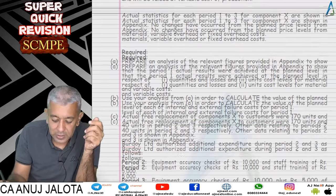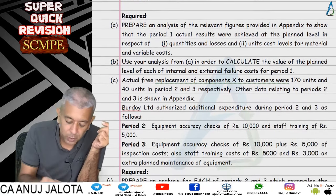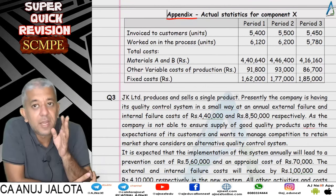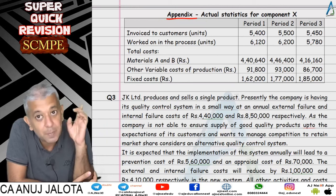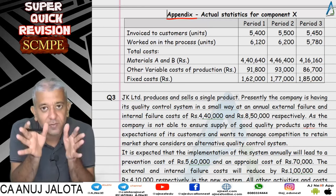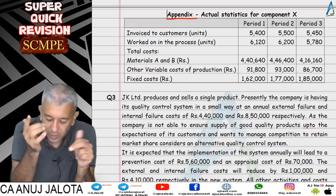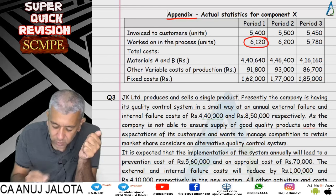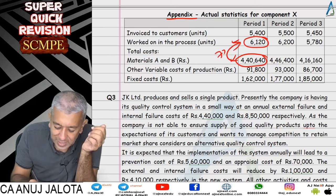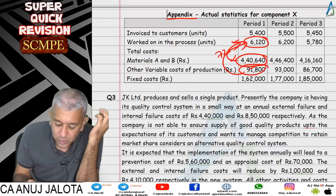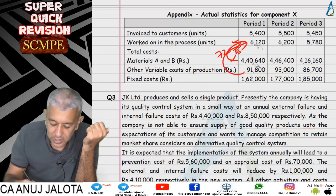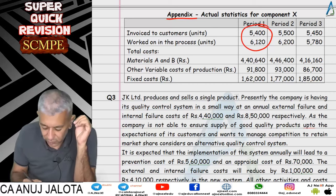In Part A, referencing the appendix for Period 1, we had to prove that actual losses were exactly 10 percent defectives and 2 percent replacements. The appendix gave units worked on, material A and B data combined, and variable overhead data. Dividing material cost by units gives 72, and dividing 91,800 by 6,120 gives exactly 15 — proving our standard cost of 87 was correct. We also tallied the units.